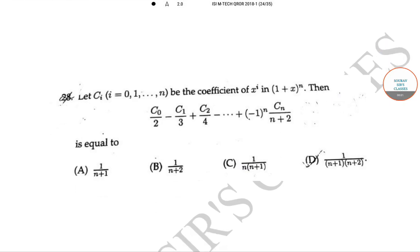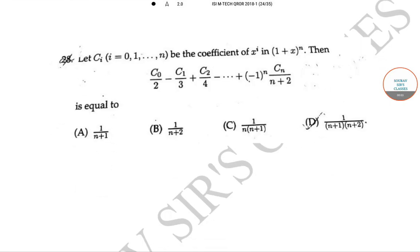Welcome to this class. The question is: let Cᵢ, where i ranges from 0 to n, be the coefficient of x to the power i in (1 + x) to the power n. Then find the value of C₀/2 - C₁/3 + C₂/4 - ... + (-1)ⁿ · Cₙ/(n+2).